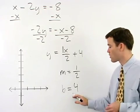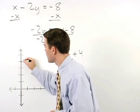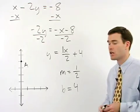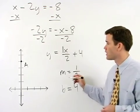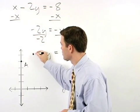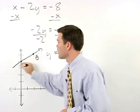To graph the line we start with the y intercept of 4 up 4 units on the y axis. From there we take our slope of 1 half so we rise 1 and run 2, plot our second point and graph the line.